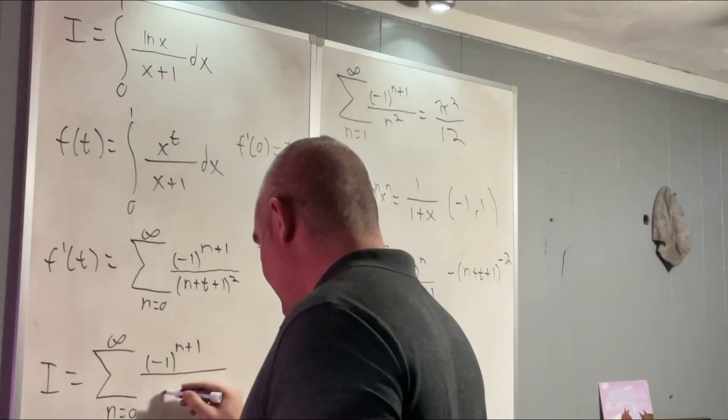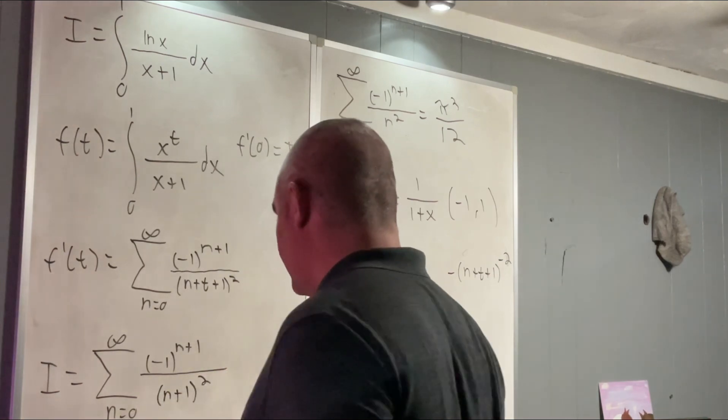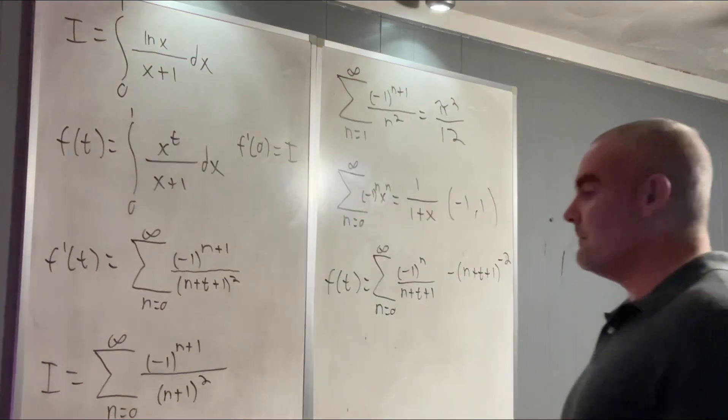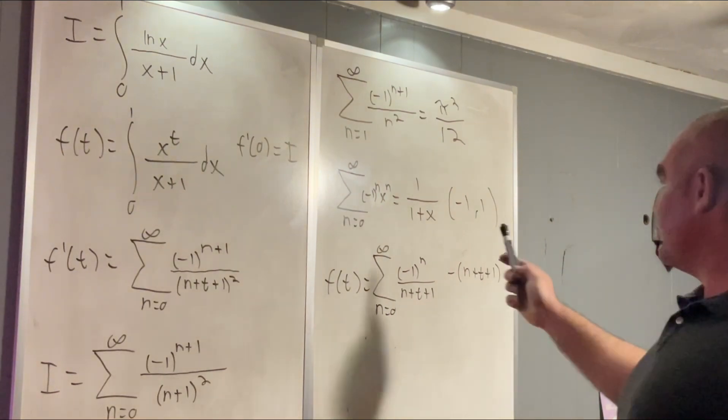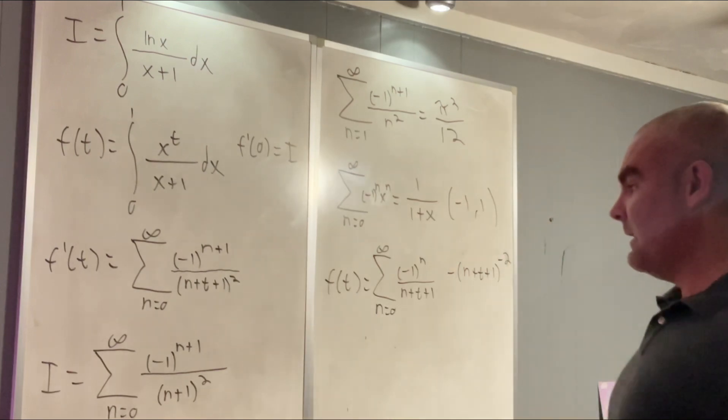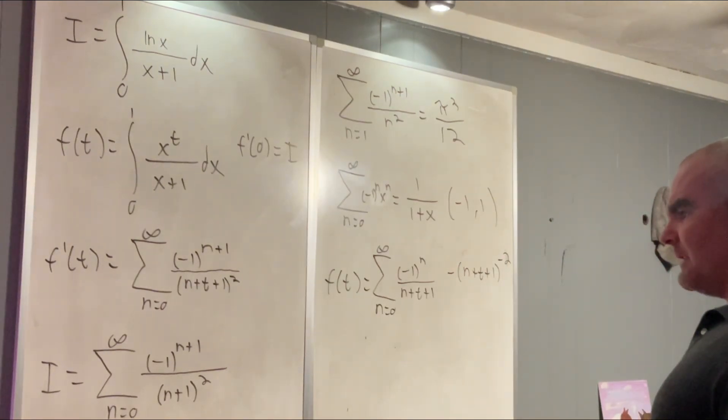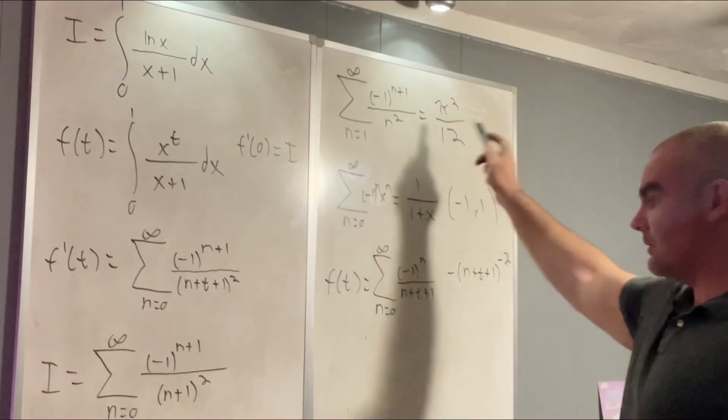So this is just going to be n plus 1 squared. All right. Okay. Well, that doesn't look exactly like anything we have. It looks close to this.